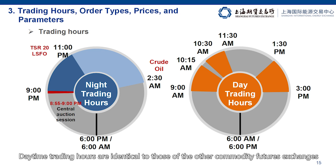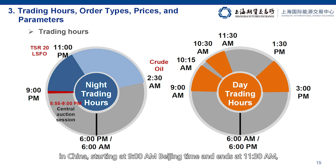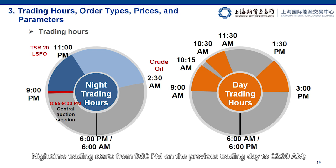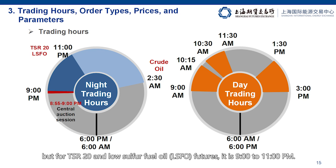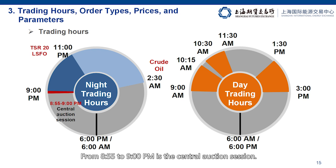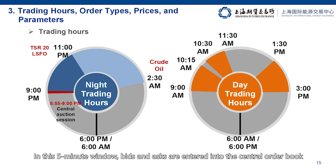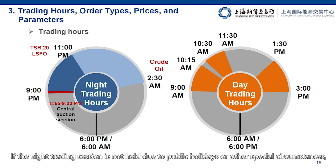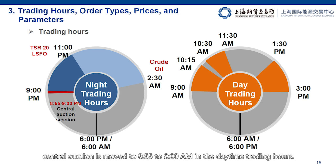Daytime trading hours are identical to those of the other commodity futures exchanges in China, starting at 9 a.m. Beijing time and ending at 11:30 a.m., with a 15-minute recess between 10:15 and 10:30. The afternoon session runs from 1:30 to 3:00 p.m. Nighttime trading starts from 9:00 p.m. on the previous trading day to 2:30 a.m. But for TSR20 and a few oil futures, it is 9 to 11:00 p.m. From 8:55 to 9:00 p.m. is the central auction session. In this five-minute window, bids and asks are entered into the central order book in the first four minutes and matched during the last minute. If the night trading session is not held due to public holidays or other special circumstances, central auction is moved to 8:55 to 9:00 a.m. in the daytime trading hours.